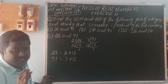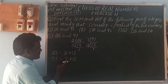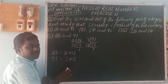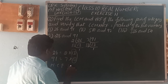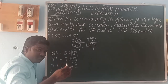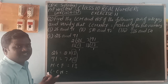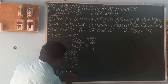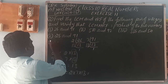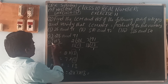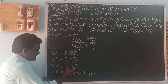For LCM, we take the highest multiple of all prime factors. The prime factors across both numbers are 2, 7, and 13. So LCM = 2 × 7 × 13 = 182. The relation to verify: LCM × HCF = product of the two numbers. So 182 × 13 = 26 × 91. Both sides give 2366, so LHS equals RHS.